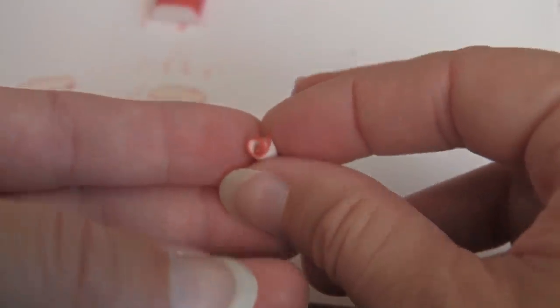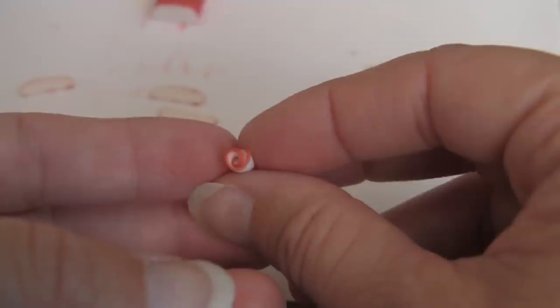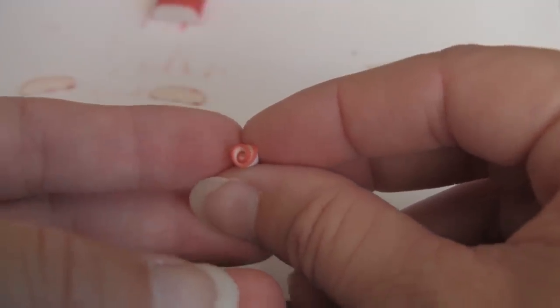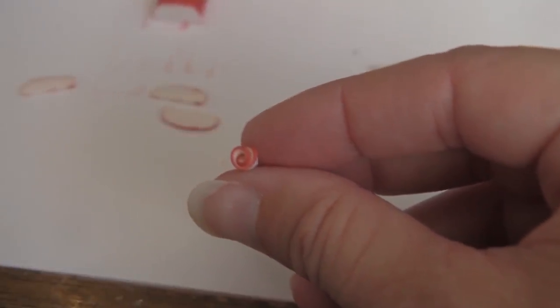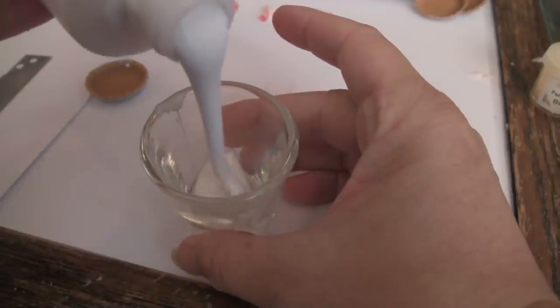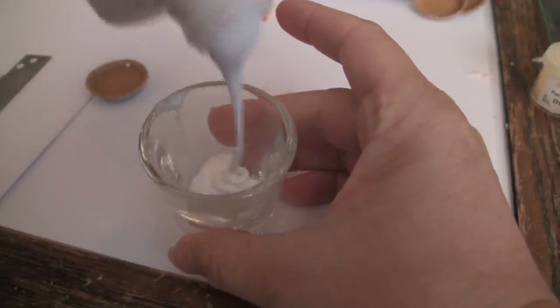I'm going to make several roses and bake them up. Then we'll come back and we will make the custard for our tart. This is my translucent liquid Sculpey, and I'm putting a good amount in.